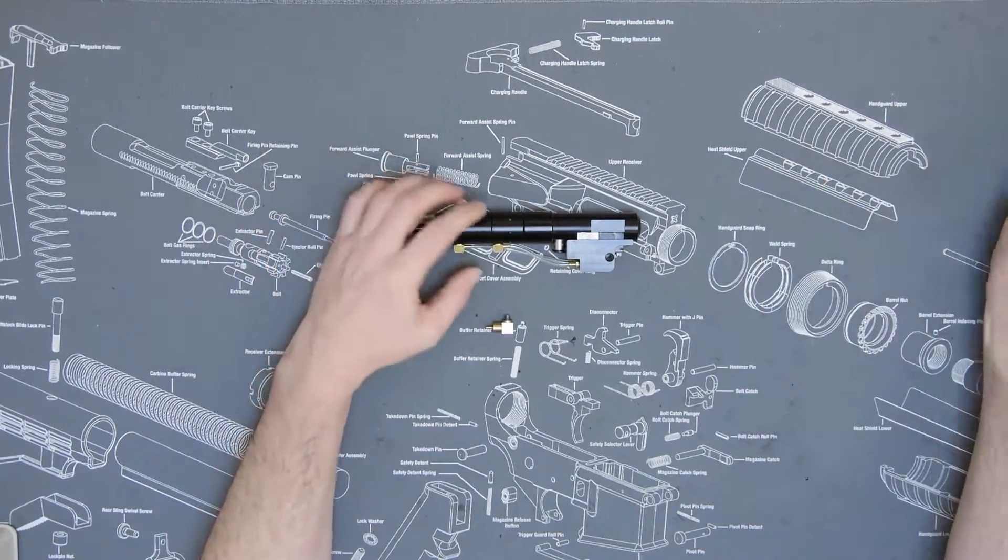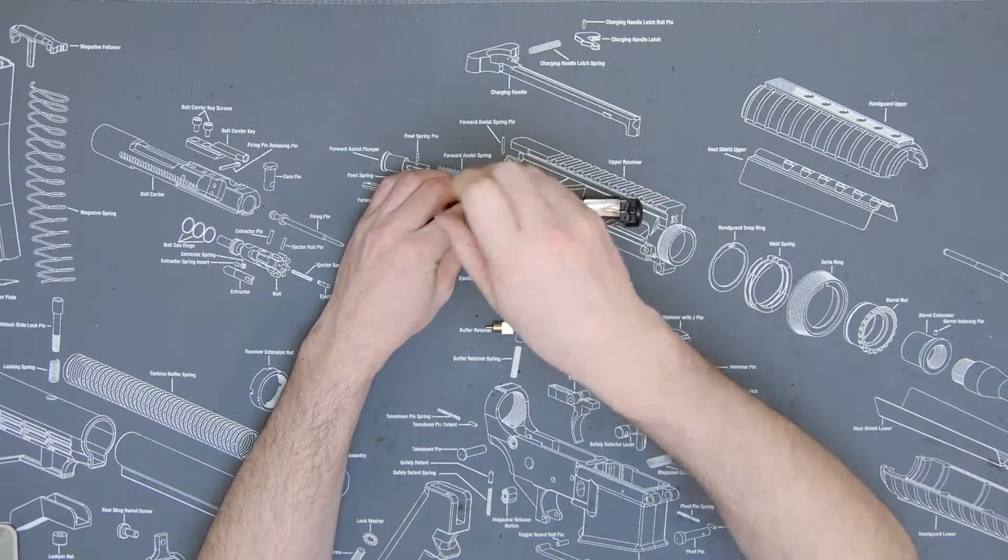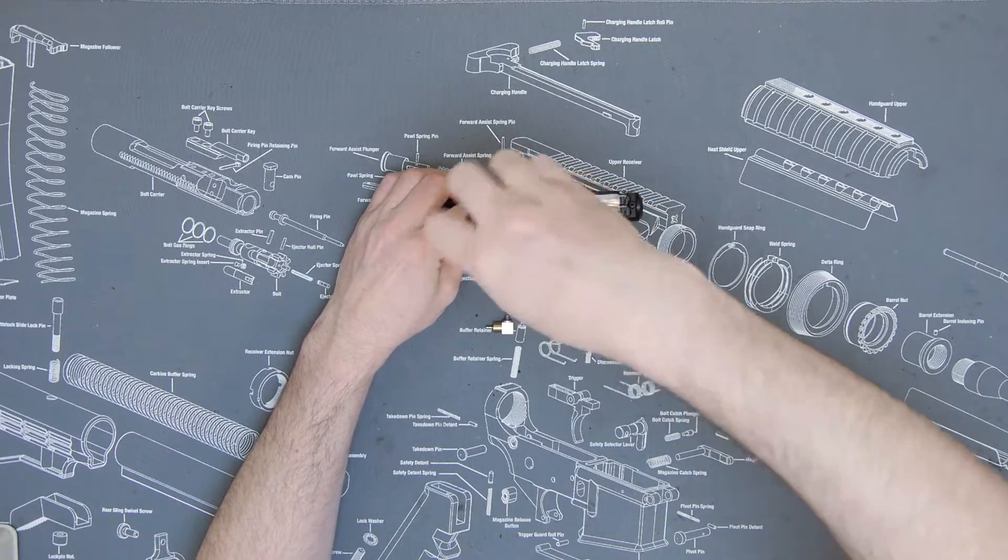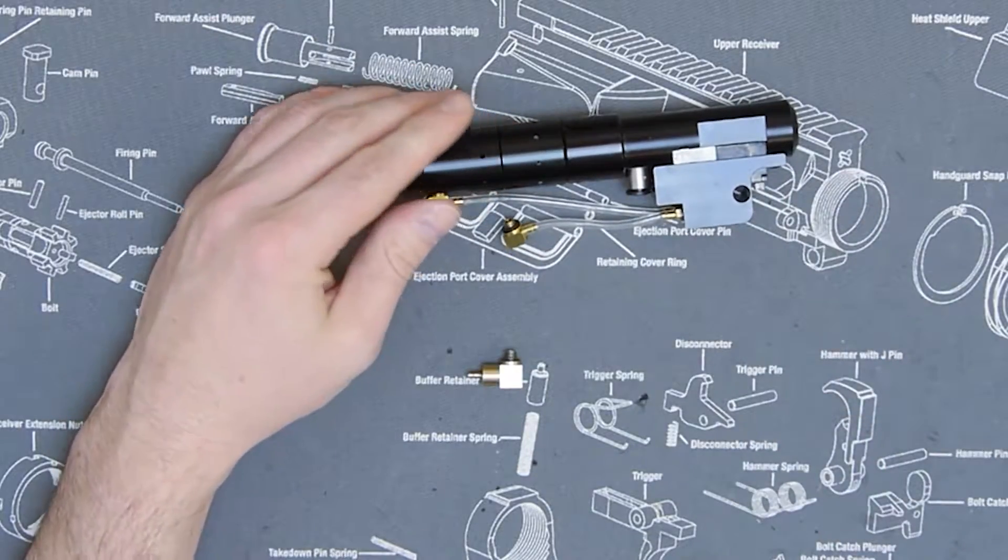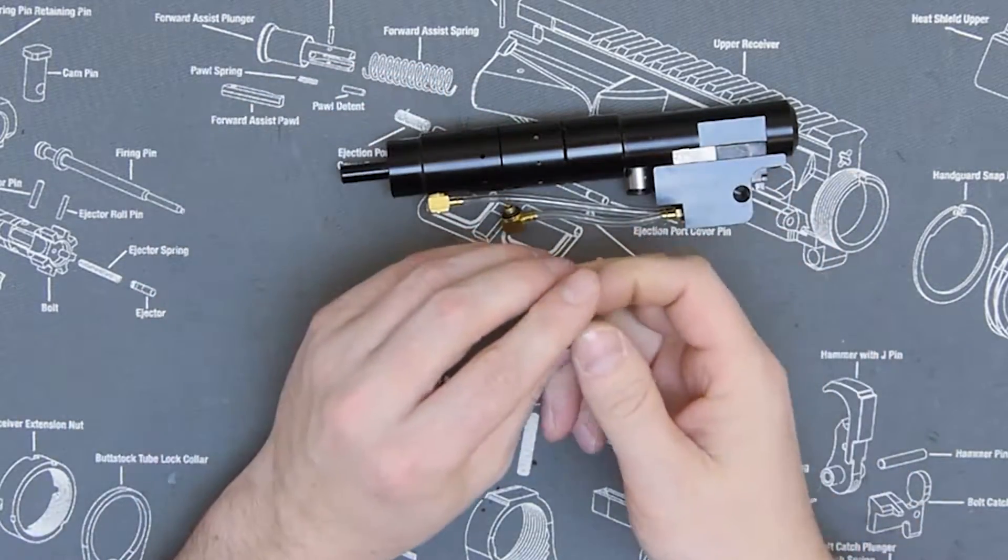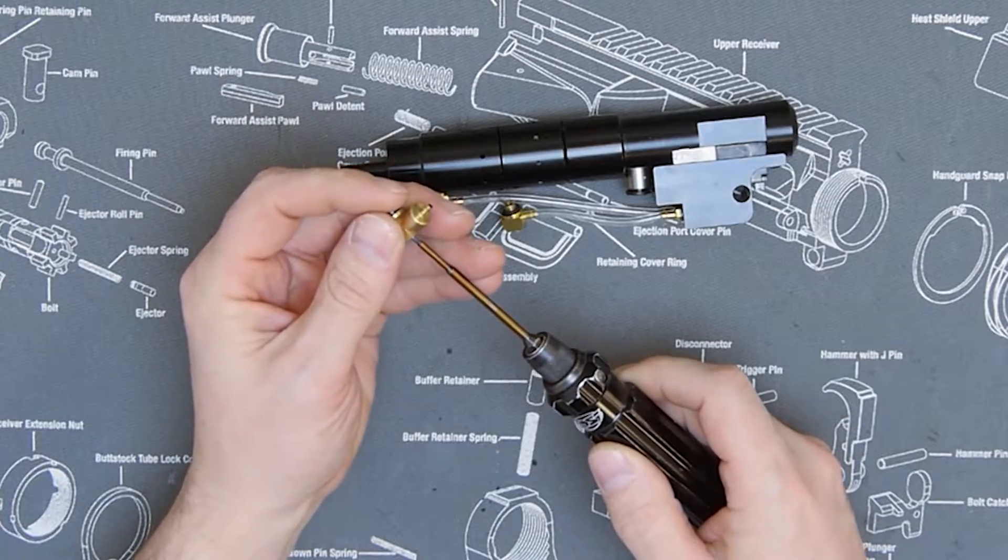Okay, so the first thing we're going to do is remove the banjo fitting and then we're going to install our QEV.